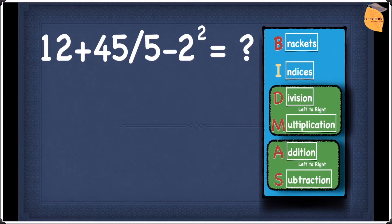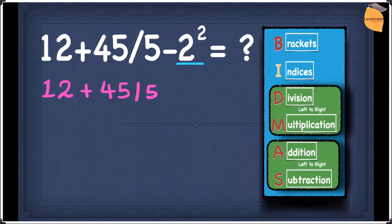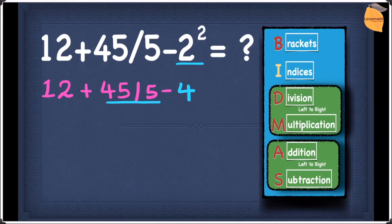This means we will rewrite the whole question except for the 2 squared, which we'll work out. So let's write 12, then plus 45, then divided by 5, and then let's work out 2 squared. 2 squared gives an answer of 4. Now let's see if we have any division — we do have division right here. So we work out the division and write everything else down. 45 divided by 5 gives 9, so we have 12 plus 9 minus 4.